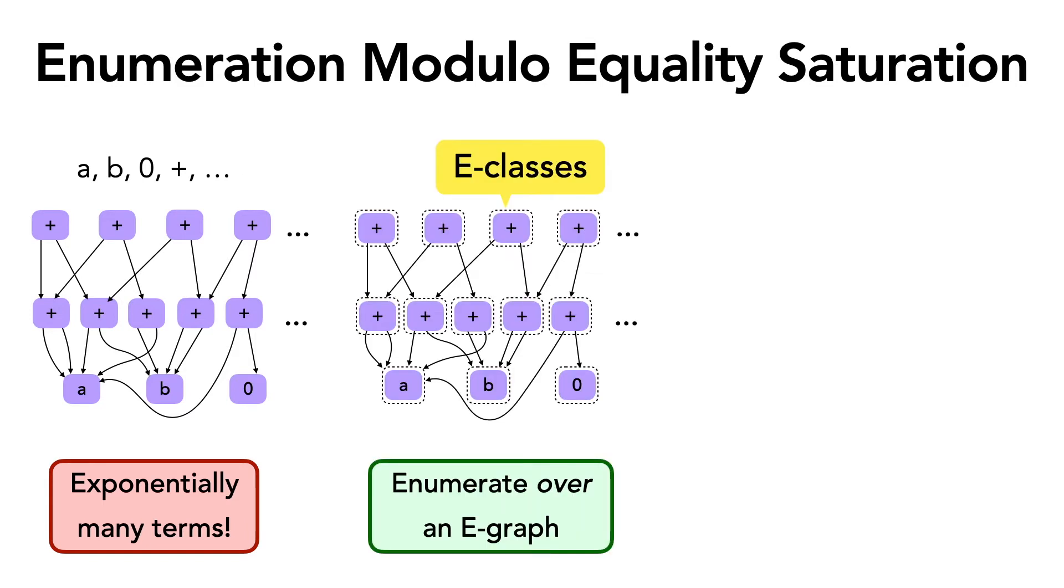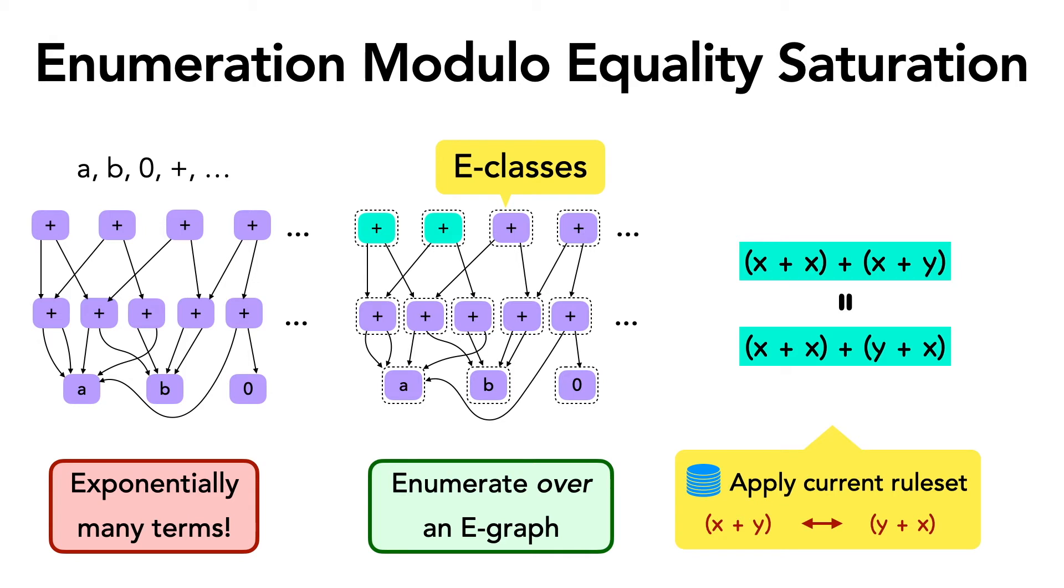Instead, in Ruler, terms are enumerated over an e-graph. We start with an initial e-graph with just some variables and constants. And then in each round, as we enumerate deeper terms, we do so over the e-classes currently in the e-graph. So effectively, we're enumerating modular equivalents. But what does enumeration modular equivalents get us? It lets us use the rewrites we have learned so far to minimize the term e-graph.